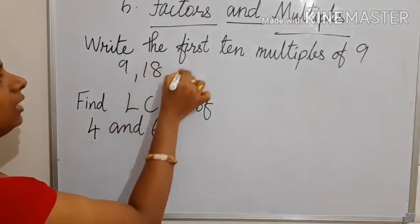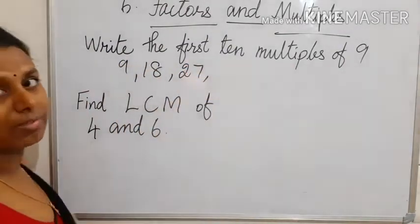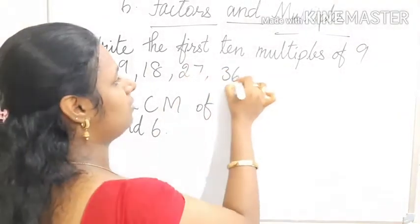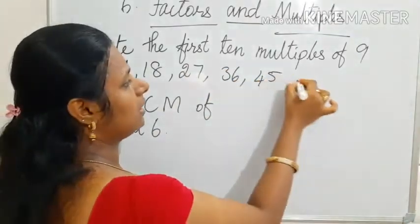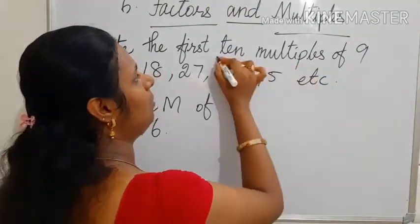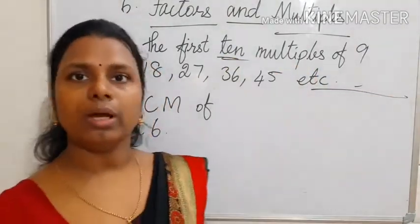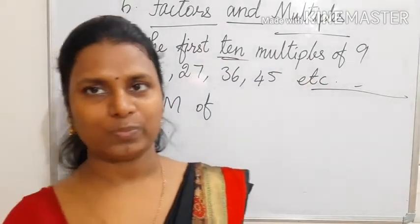9 ones are 9, 9 twos are 18, 9 threes are 27, 9 fours are 36, 9 fives are 45, etc. You have to write 10 multiples, 10 numbers. You have to continue.